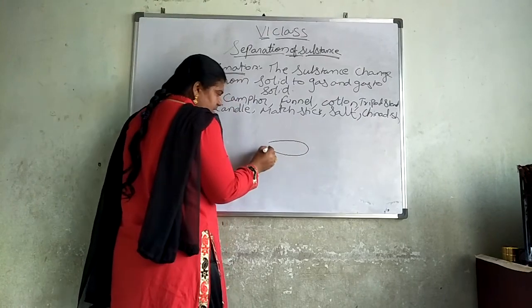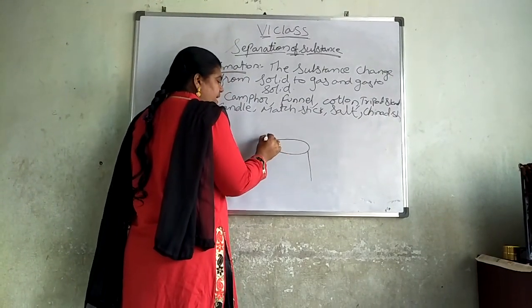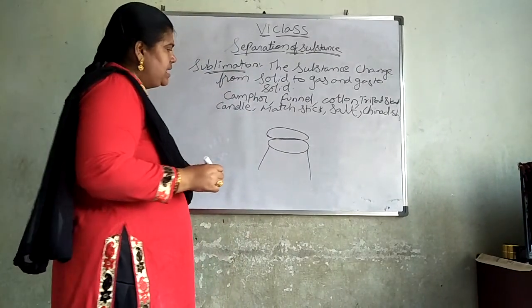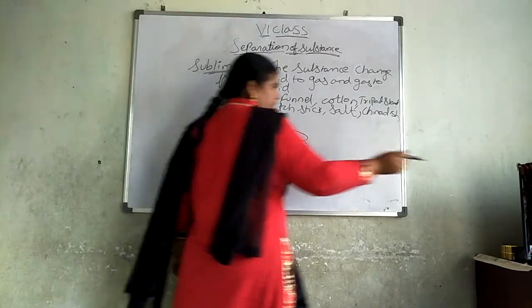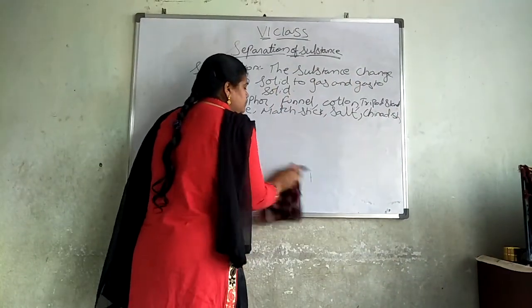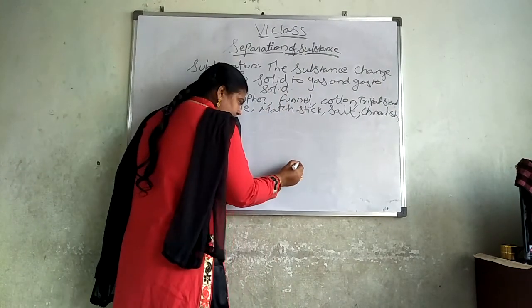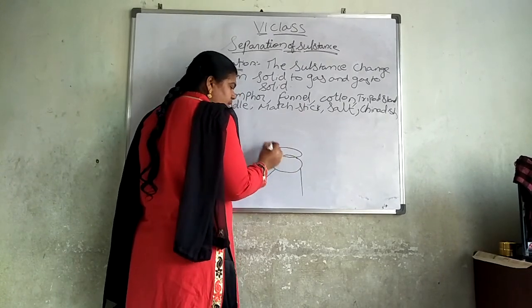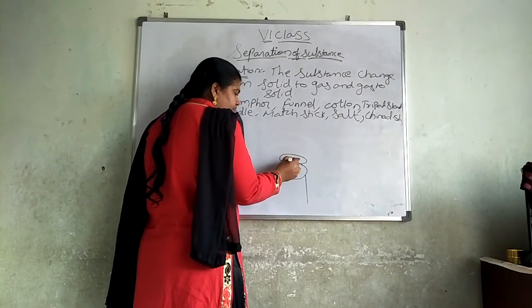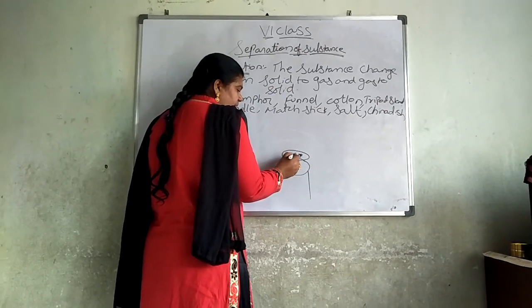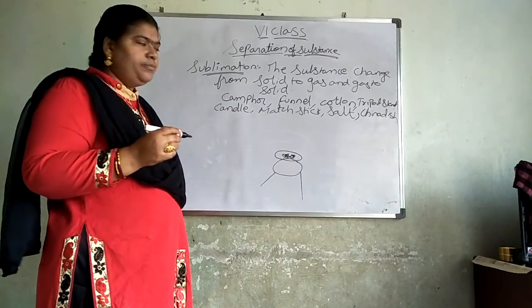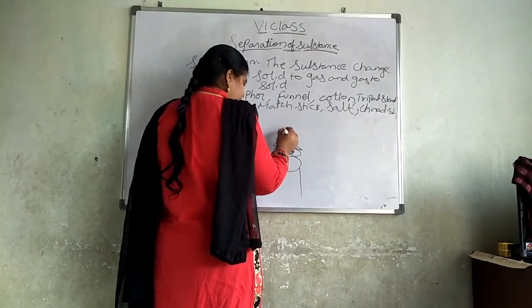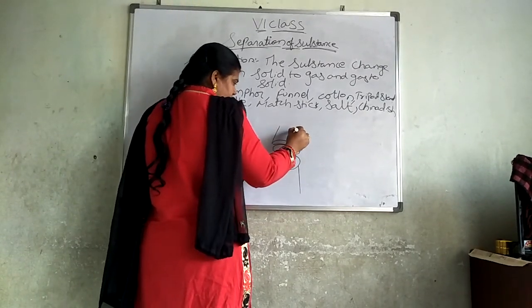So here what we are doing is: take a tripod stand, then place a chain dish on this tripod stand.